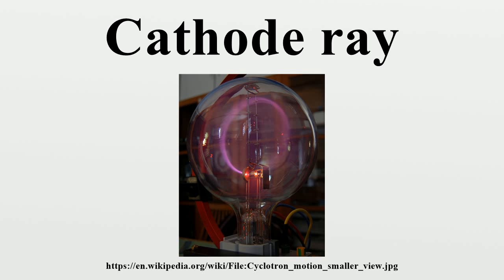By the 1870s, British physicist William Crookes and others were able to evacuate tubes to a lower pressure, below 10⁻⁶ atmospheres — called Crookes tubes. Faraday had been the first to notice a dark space just in front of the cathode where there was no luminescence, known as the cathode dark space, Faraday dark space, or Crookes dark space. Crookes found that as he pumped more air out, the Faraday dark space spread down the tube from the cathode toward the anode until the tube was totally dark. As more air was pumped out, electrons could travel farther on average before striking a gas atom.